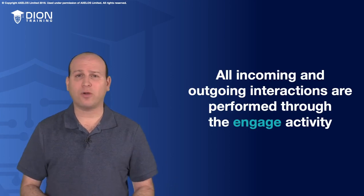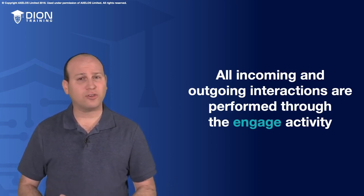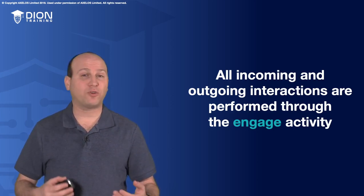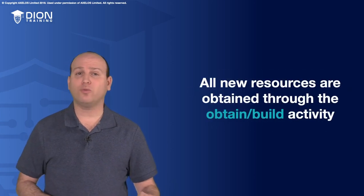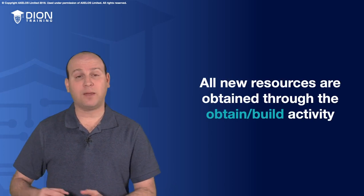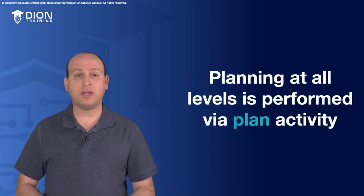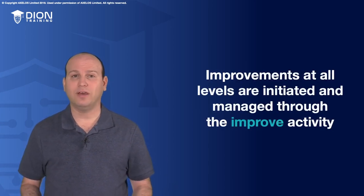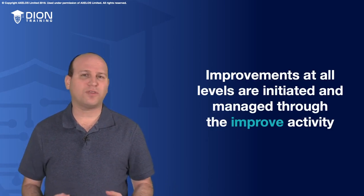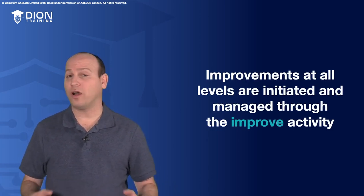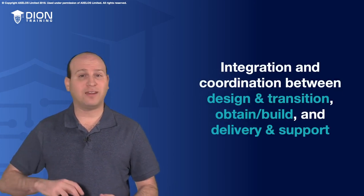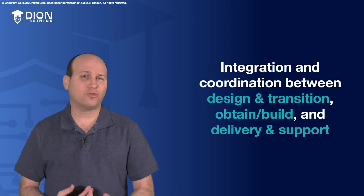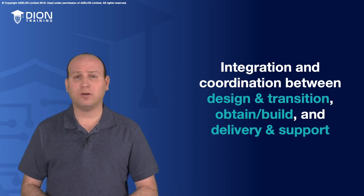All incoming and outgoing interactions with parties external to your service provider are performed through the engage value chain activity — that's why it's one of the first ones that normally occurs. Anytime you want a new resource, that's gonna be obtained through obtain and build. Any planning occurs through the plan activity, and when you're trying to improve things, that happens through the improve activity. As we create, modify, deliver, maintain, and support a component, product, or service, all of that happens inside that central cube between design and transition, obtain and build, and delivery and support.